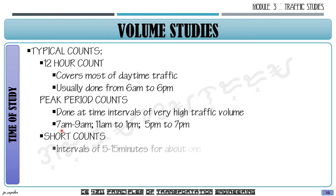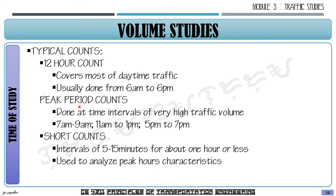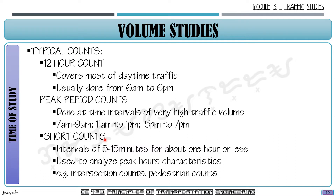Short counts are data collected for intervals of 5 to 15 minutes for about one hour or less. This is used to analyze peak hour characteristics. For example, during the morning peak from 7 a.m. to 9 a.m., we count vehicles in 15-minute intervals: 7:00 to 7:15, then reset and count again from 7:15 to 7:30, and so on. That is the meaning of short counts. Examples include intersection counts and pedestrian counts.